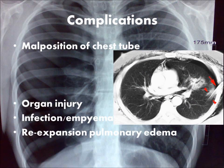The most common complication of tube thoracostomy is malposition of the chest tube, whether this be puncturing of the lung parenchyma or inadequate entry of the side ports into the pleural space. Other complications include injury to adjacent tissues, infection, or re-expansion pulmonary edema.